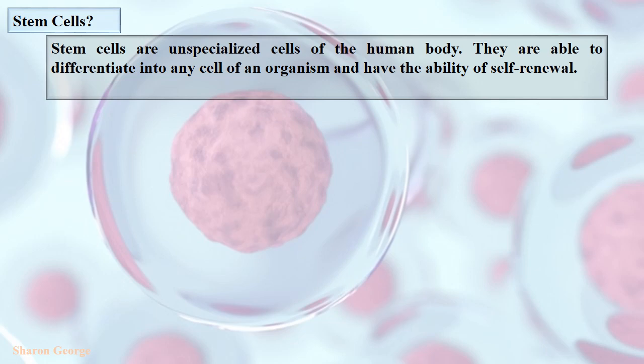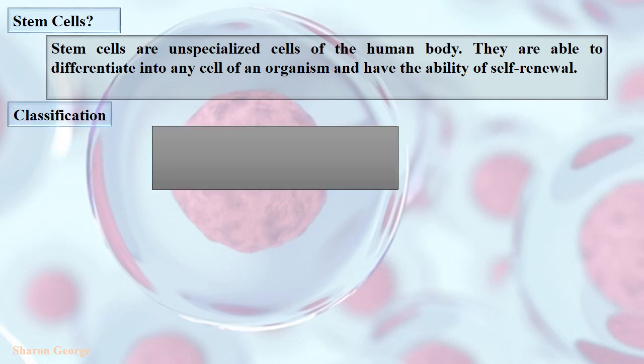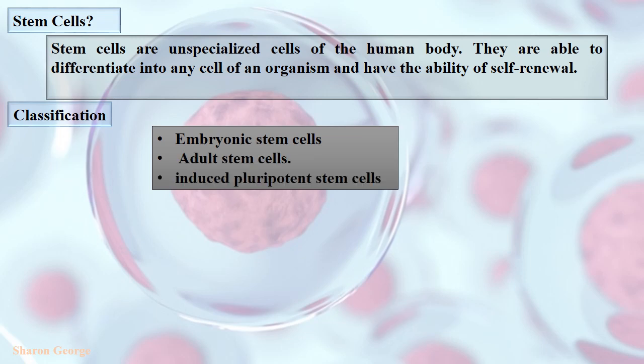These stem cells are classified into three major groups: one is embryonic stem cells, next is adult stem cells, and another one is induced pluripotent stem cells.